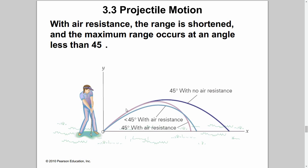If there is some air resistance, it may slightly alter the results depending on the direction of the air resistance, but the effect is minimal — the 45-degree launch angle still produces near-maximum range.